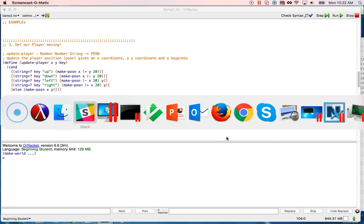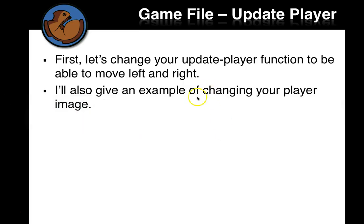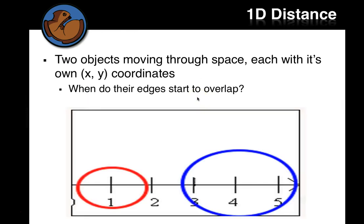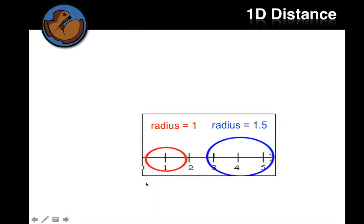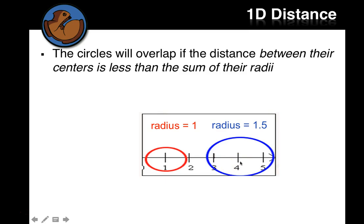Now let's look at our new thing for today. We're just going to think about the x-coordinate. Two objects moving through space, each with its own x- and y-coordinates — when do their edges overlap? So here's an ellipse with a radius of 1, another one with a radius of 1.5. The circles will overlap if the distance between their centers is less than the sum of their radii.